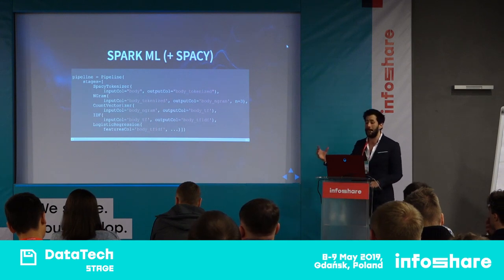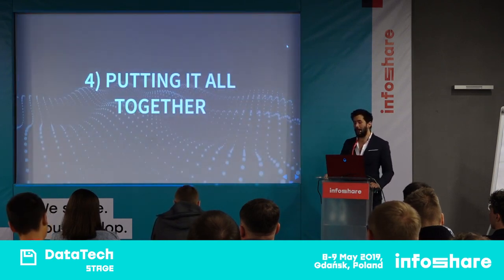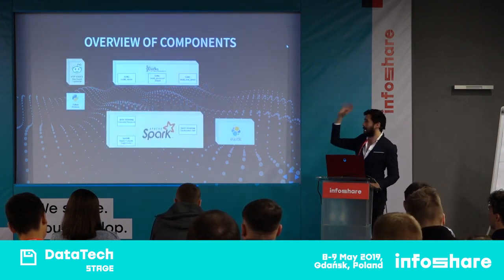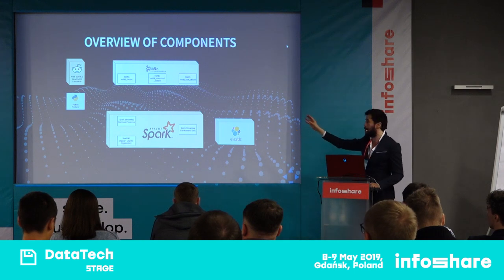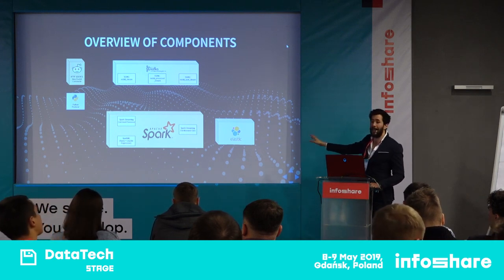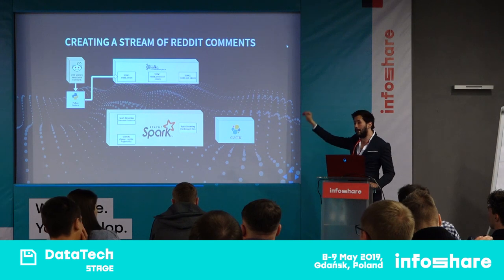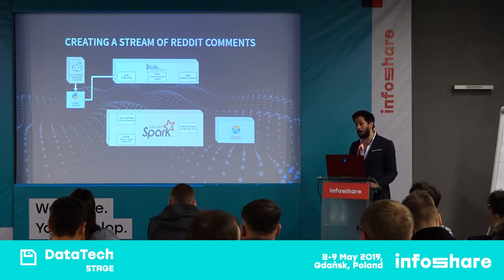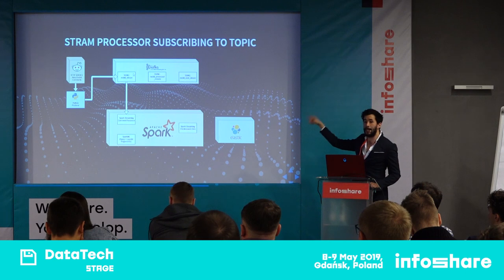For the machine learning piece, we're using Spark ML as we're already using Spark Streaming, as well as spaCy for the actual text processing. Now let's put everything together. We're going to have a few components: Reddit comments, a Python worker pushing stuff into our stream, the Spark engine, and then we'll visualize outputs on an Elasticsearch database. A Python worker will pull comments from Reddit and push them into a Kafka topic called 'reddit_stream'.